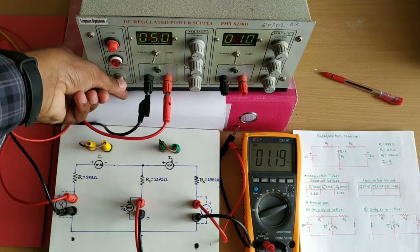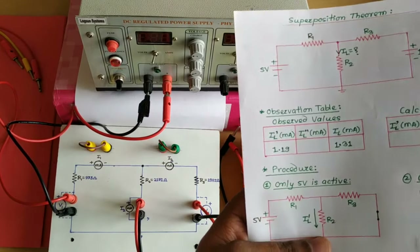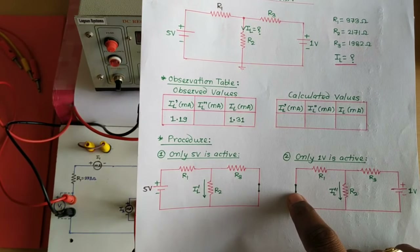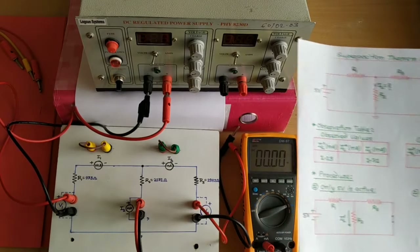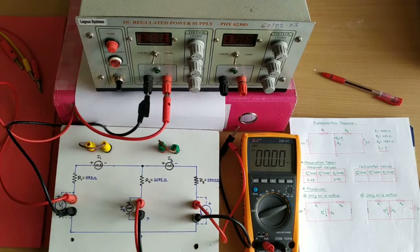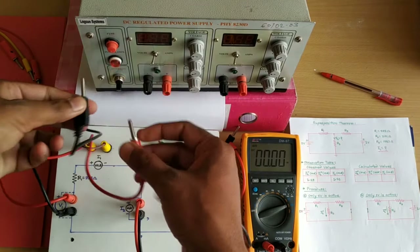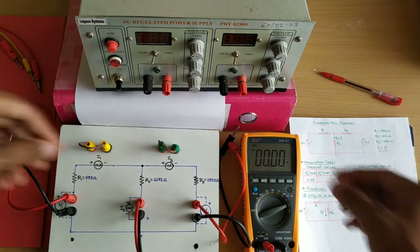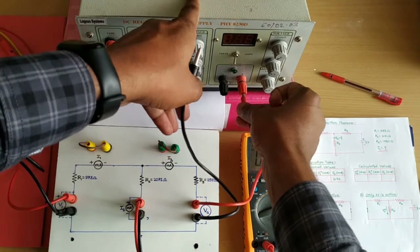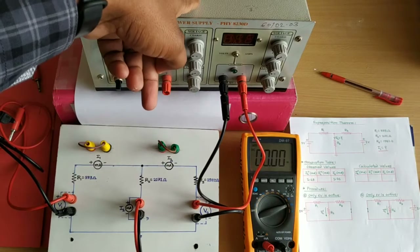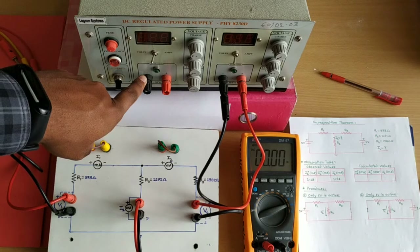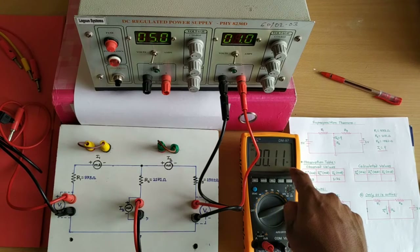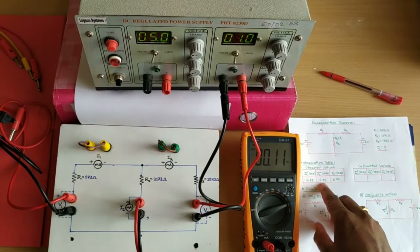We turn off the power supply and proceed to Step 2. Now we keep only 1V active and disable 5V by shorting the 5V terminals. The 1V source is reconnected — positive and negative at their respective points. With only 1V active, we turn on the power supply and read the ammeter: 0.11 milliampere. We note IL'' = 0.11 mA.